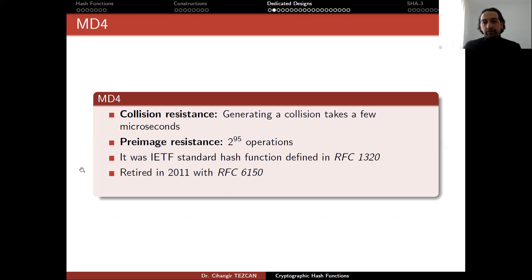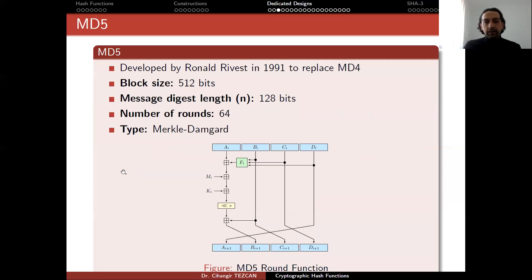So it was an IETF standard hash function defined in RFC 1320, but it was retired in 2011 with RFC 6150. So as you can see, we have a broken algorithm where we can generate collisions in a few microseconds, but it wasn't retired until 2011. So it takes a long time to replace cryptographic algorithms. This is why we should pay attention more to cryptanalysis results. But this influenced later designs like MD5, SHA-1, and RIPE-MD.